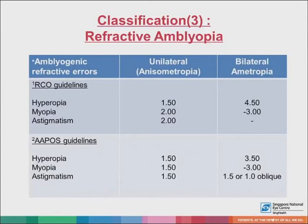This is a table showing the values of refractive errors, either in one or both eyes, that can be amblyogenic, from the Royal College of Ophthalmology and the American Association of Pediatric Ophthalmology respectively. As you can see, unilateral refractive errors are more amblyogenic at lower values compared to bilateral.